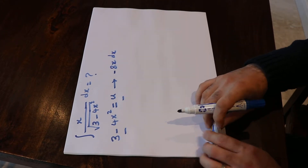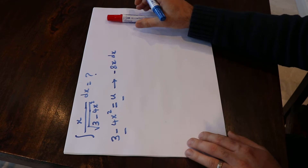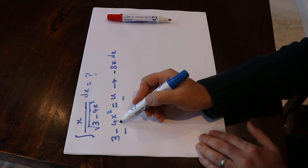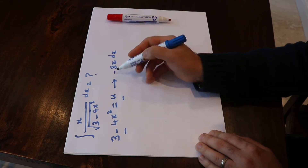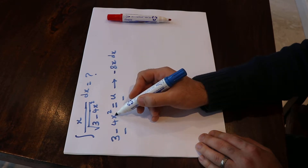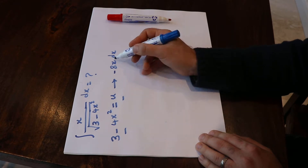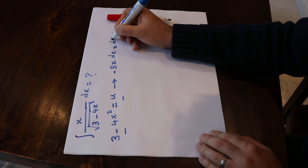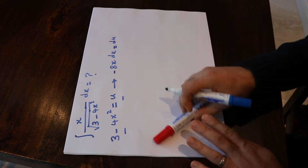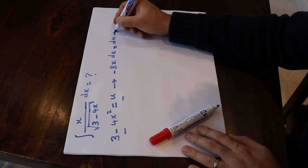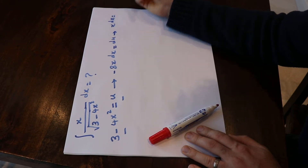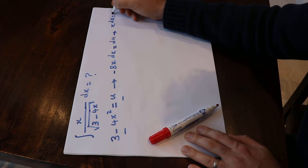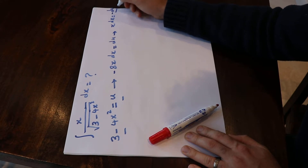Because the derivative of 3 is equal to 0, and the derivative of this term will be minus 4 times 2, that is minus 8, and x with the power of 1 — that will be equal to du. This means x dx will be equal to minus du divided by 8.